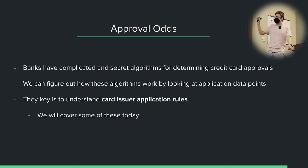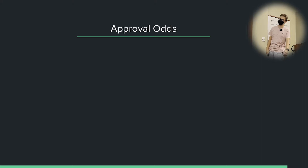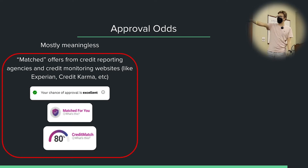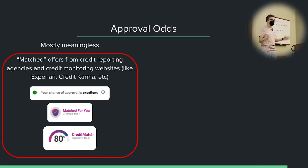The key is to understand the rules, which we can find out from the data points online. You may receive certain matched offers online from credit reporting agencies — Experian, Credit Karma, etc. These are meaningless. When you see these, they are marketing offers. If it says your Credit Karma chance of approval is excellent, or Experian matched for you — stuff like that — entirely meaningless. You should ignore it. It's a marketing offer; they're trying to get you to apply for the card.